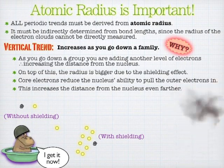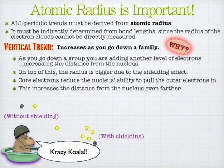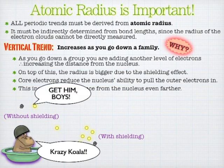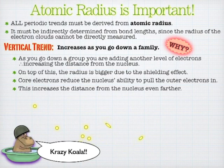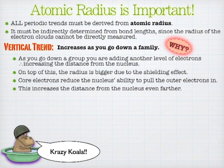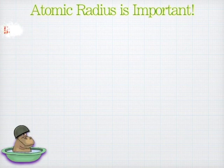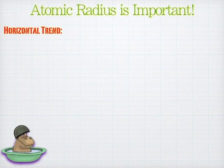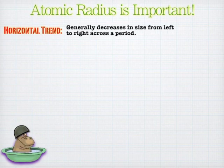The vertical trend most people can get. But the idea of the horizontal trend is what really confuses a lot of students, so just be ready for the opposite of what you think would happen. The horizontal trend is exactly opposite of what you would think. You might think as you go across the periodic table, you're adding more electrons and the radius would get bigger. Well, that's partially true — you are adding more electrons. But as you go across the period, the actual radius gets smaller.